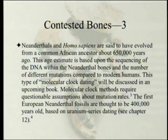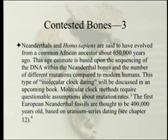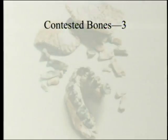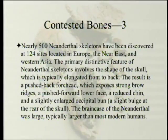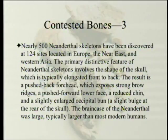Neanderthals and Homo sapiens are said to have evolved from a common African ancestor about 650,000 years ago, based on DNA sequencing and mutation counts compared to modern humans — a molecular clock method that requires questionable assumptions about mutation rates. The first European Neanderthal fossils are thought to be 400,000 years old based on uranium series dating. Nearly 500 Neanderthal skeletons have been discovered at 124 sites in Europe, the Near East, and Western Asia. The primary distinctive feature involves the skull shape: typically elongated front to back, resulting in a pushed-back forehead, strong brow ridges, pushed-forward lower face, reduced chin, and a slightly enlarged occipital bun.